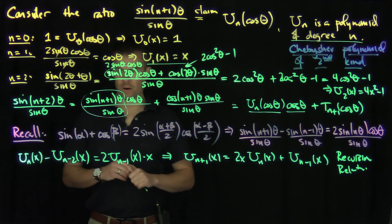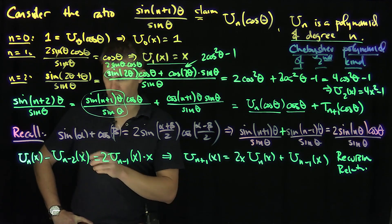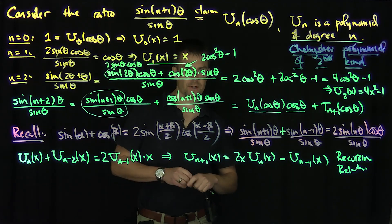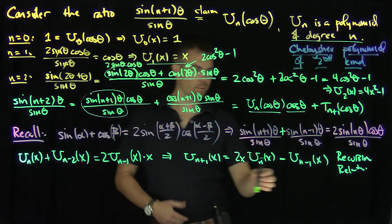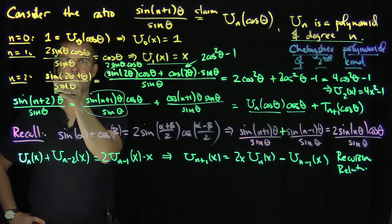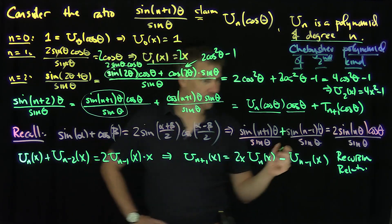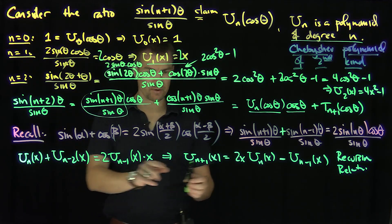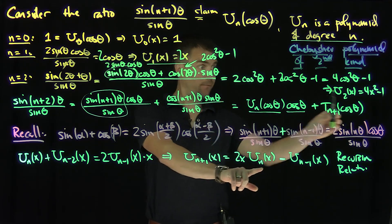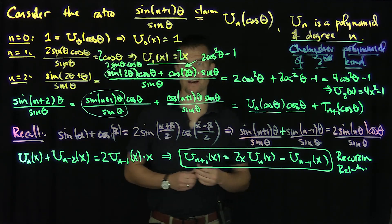Actually, let me correct an error: when n=1, we have sine of 2θ with the sines canceling to give 2 cos θ, so U₁(x) = 2x, not x — I missed that factor of 2. With that correction, let's verify the recursion: U₂ = 2x · U₁ − U₀ = 2x · 2x − 1 = 4x² − 1. The recursion works with these corrected base cases, and this relation uniquely determines the Chebyshev polynomials of the second kind.